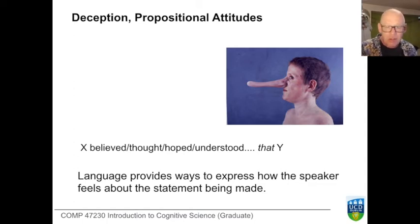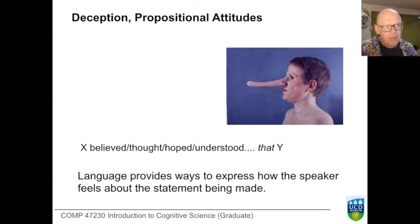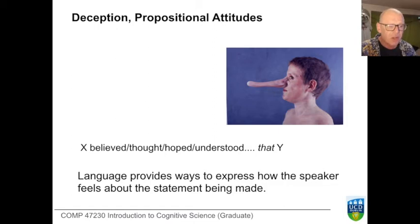This also introduces the possibility of lying — we can signal feelings, motivations, and convictions we don't actually have. Deception is probably found among chimpanzees, but it's not obvious we can identify it in all animals, so that seems to be something rather special about human communication.